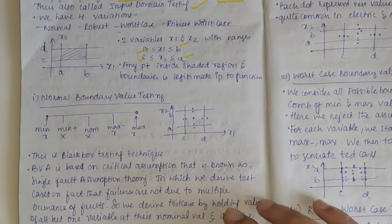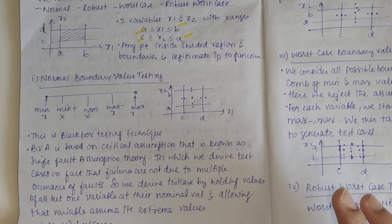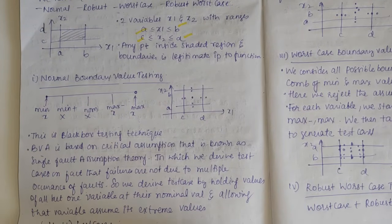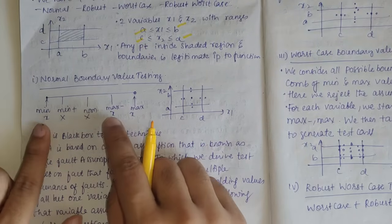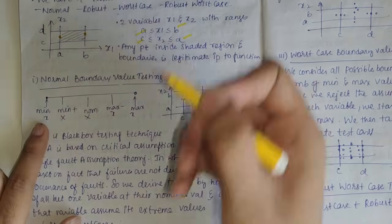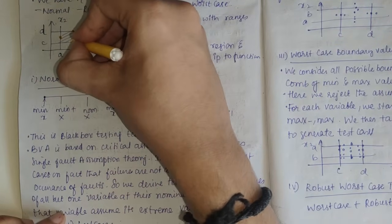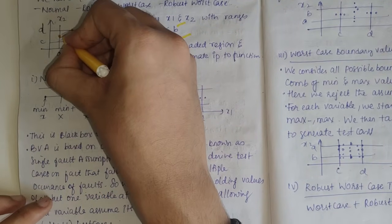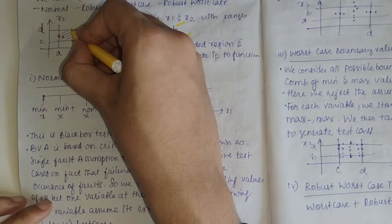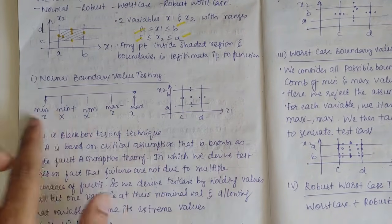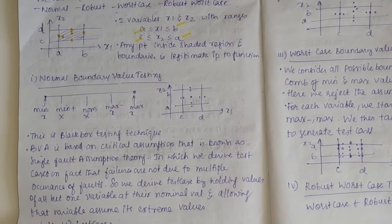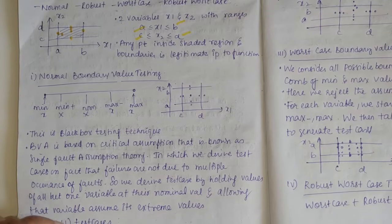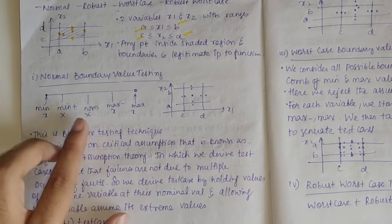In normal BVA, we deduce five test cases: minimum, minimum plus, nominal (middle value), maximum minus, and maximum. For a range of 1 to 100: minimum is 1, maximum is 100, nominal is 50, minimum plus is 2, and maximum minus is 99. These five values constitute the test cases for normal BVA.